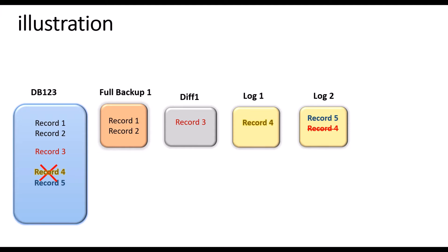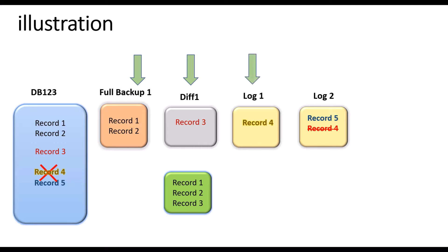Now if I want to restore, I start with my full backup, then the differential backup — I will get the first three records. If I restore the first log backup I will get records 1, 2, 3, and 4, so till here I have all four records.